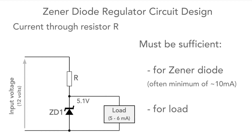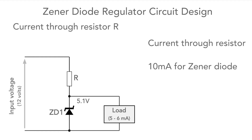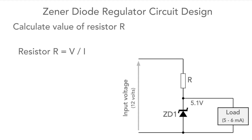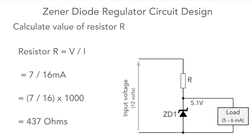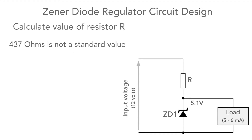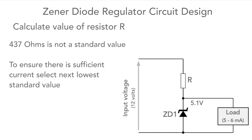The current must also be able to supply the load and accommodate any variations in current that may occur. Knowing the current for the diode is 10 milliamps and there's a maximum of 6 milliamps for the load, the total becomes 16 milliamps. Using Ohm's law, resistance equals V divided by I: 7 divided by 16 milliamps — converting to amps — works out to be 437 ohms. To ensure there's always enough current, we go for the nearest preferred value lower than the calculated result, which is 390 ohms.